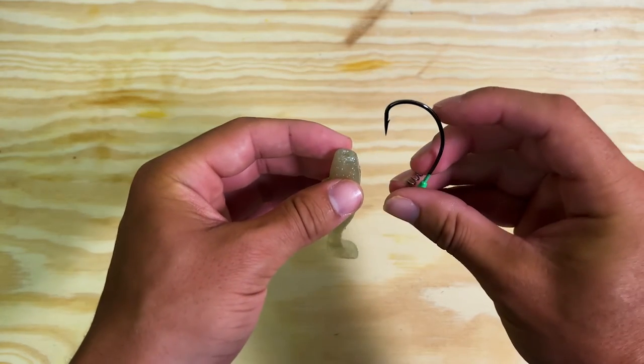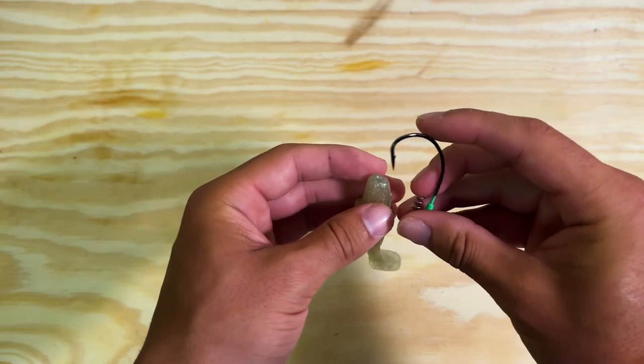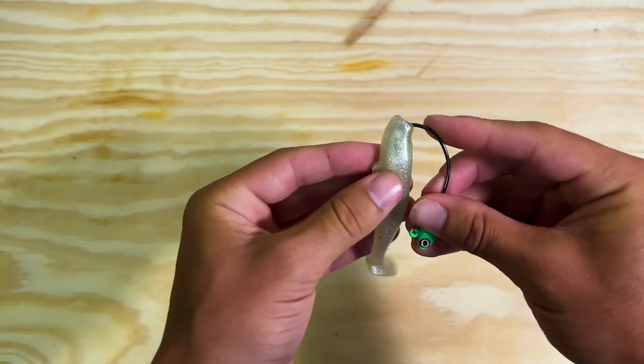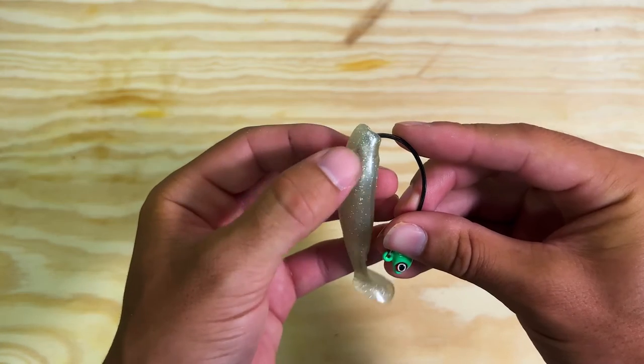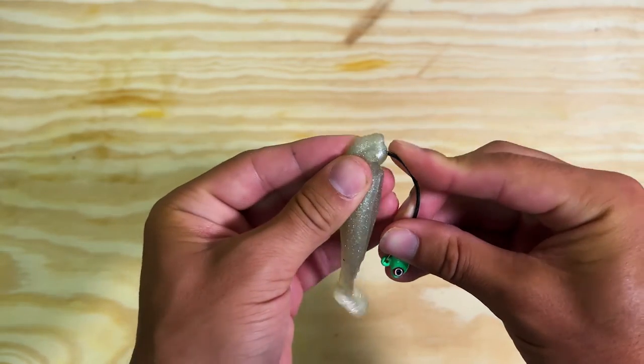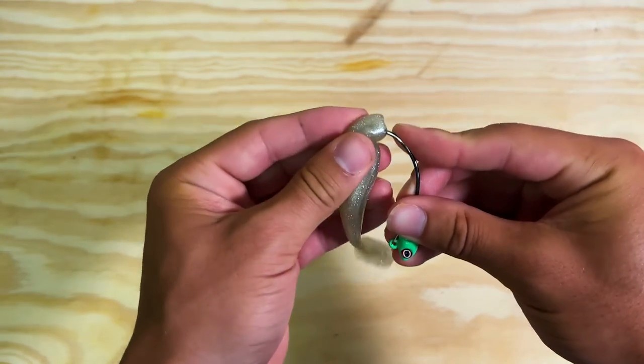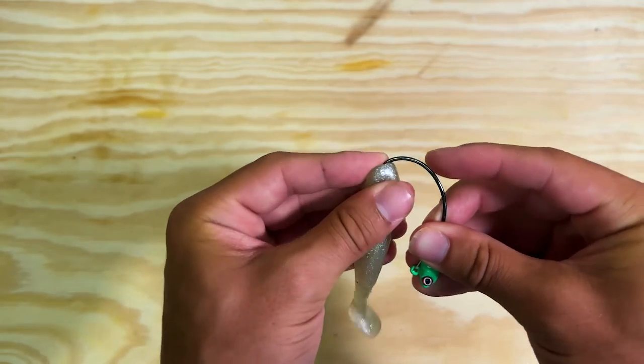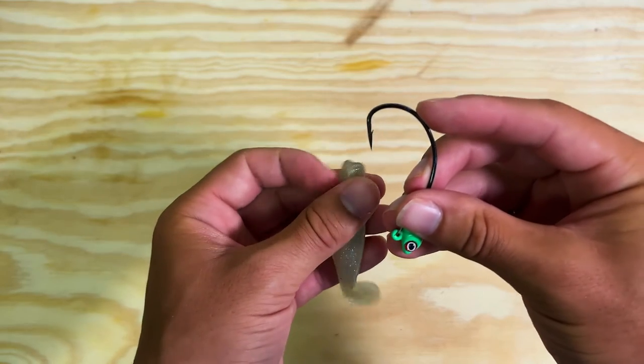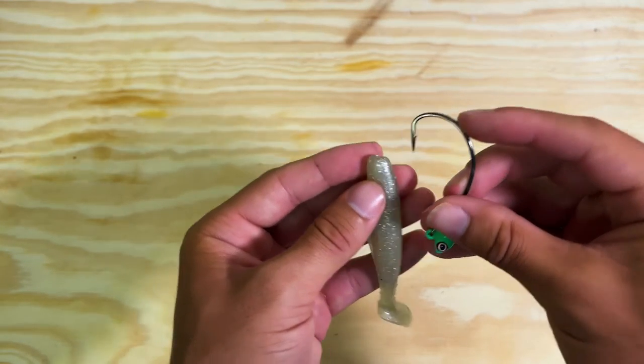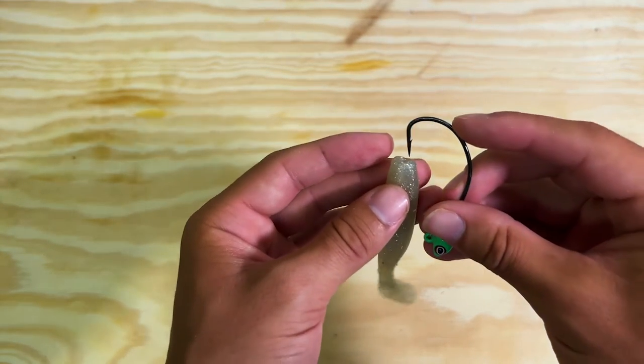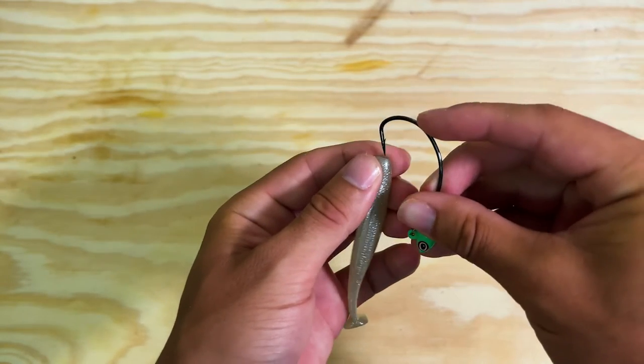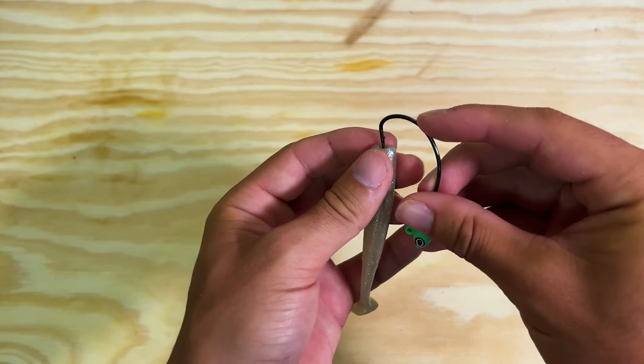So you take the hook point and you dig it into where you're putting your screw lock. See, you can see the hook point going in there. So you want to get it a little deeper than where the screw lock is going to go to. So get it down and pull it out. Make sure it's a barbed hook also. That's very important. And then what I'll do with the paddle tail is I'll spin it.